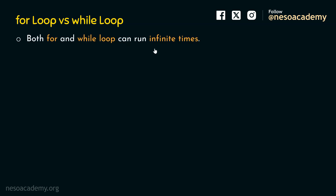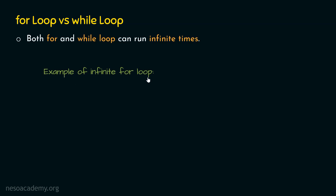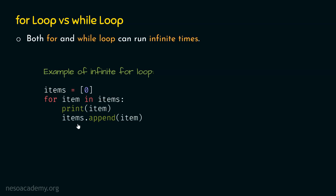Difference number three: both for and while loop can run infinite times. In previous presentations we have seen examples of infinite while loop, but we haven't seen an example of infinite for loop. Let's see how an infinite for loop looks like. Let's declare a list called items and provide one item to the list — just one item, zero, in this list. Now let's write: for item in items, print item, and then items.append(item). We are appending zero back into this list.